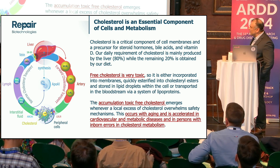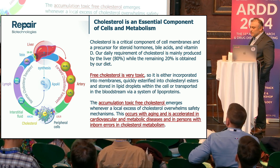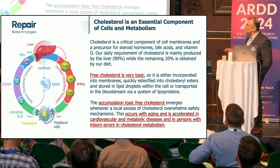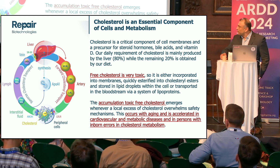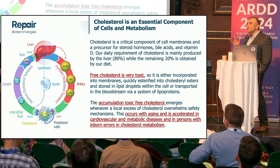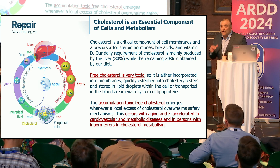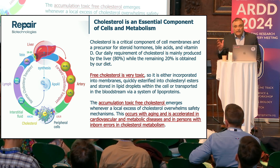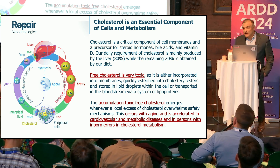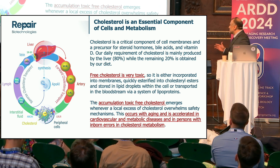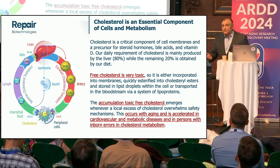Excess cholesterol goes into HDL particles, which bring it back to the liver for processing. This is called the forward and reverse cholesterol transport pathway. Now, the accumulation of toxic free cholesterol emerges when local excesses of cholesterol overwhelm these protective safety mechanisms. This occurs with aging, is accelerated in cardiovascular and metabolic diseases, and in individuals that have inborn mutations in cholesterol metabolism.